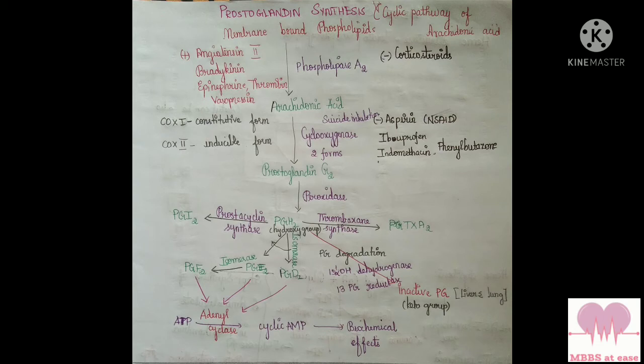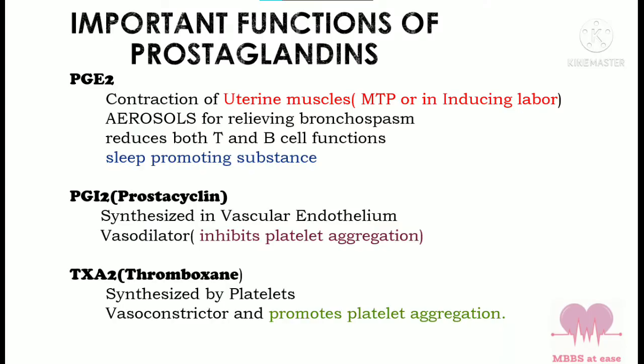When prostaglandin H2 is acted upon by 15-hydroxy dehydrogenase, prostaglandins become inactive by converting the hydroxy group into a keto group. PG degradation mostly occurs in the lungs and liver.